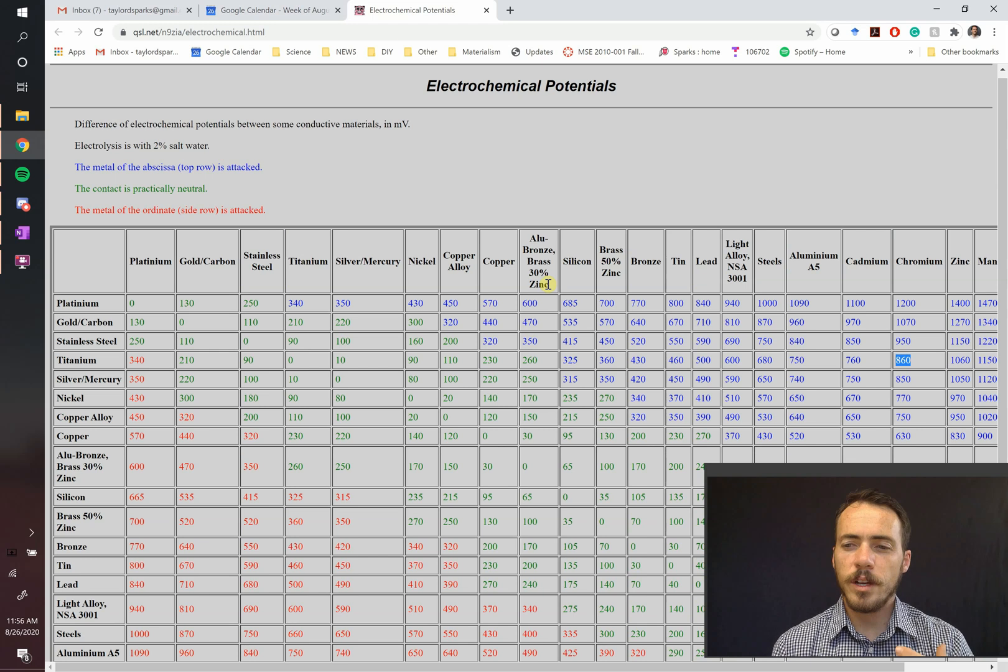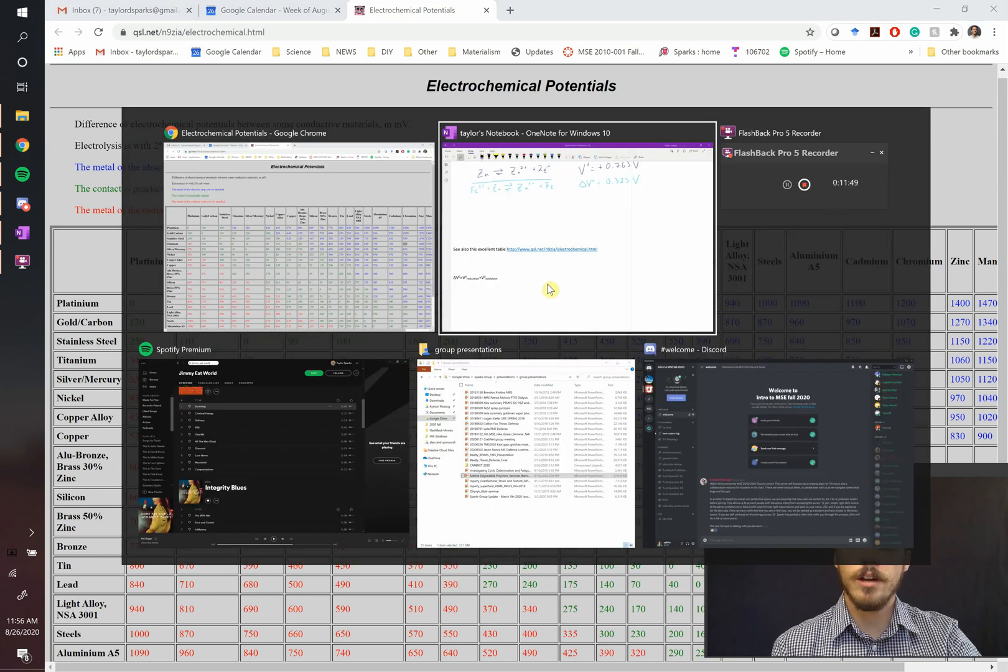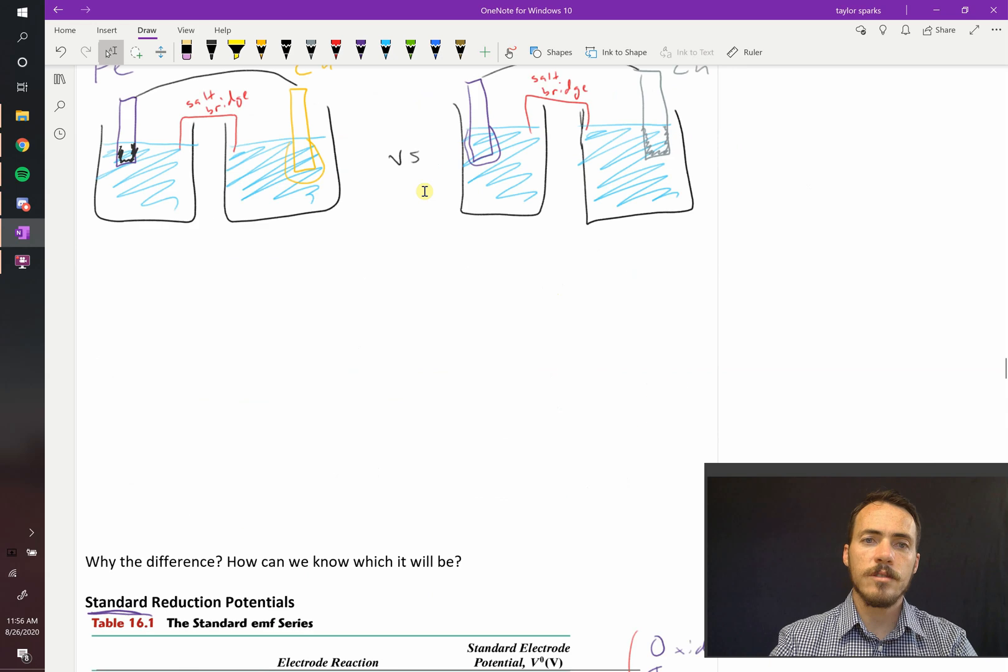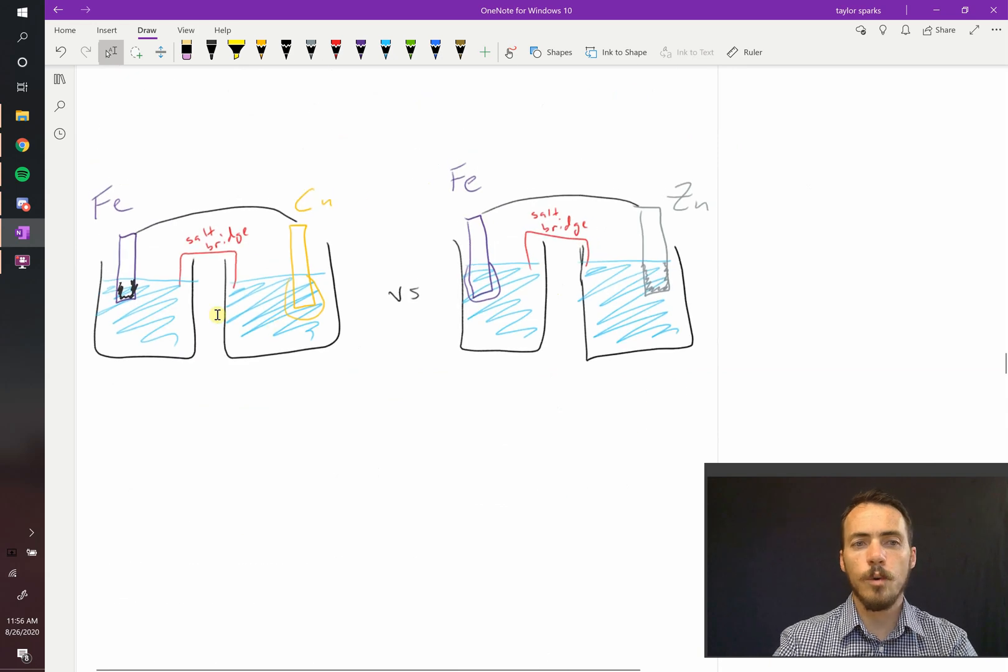But they are neglecting something, which is how temperature and the concentration of your ions can influence these reactions. So far, we've been talking about equal molality of these solutions. What happens when the concentration of these solutions changes? Or what about at different temperatures? We'll talk about that in our next video.